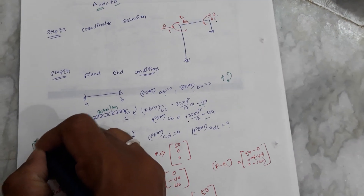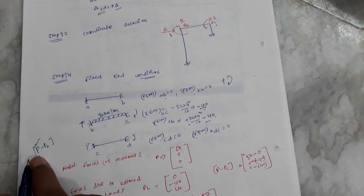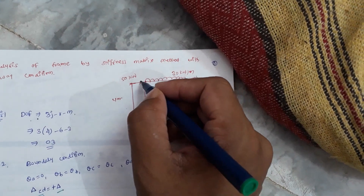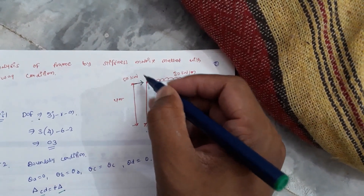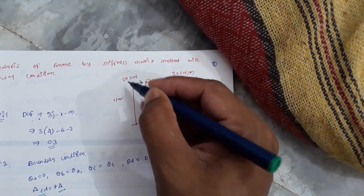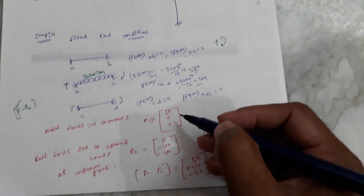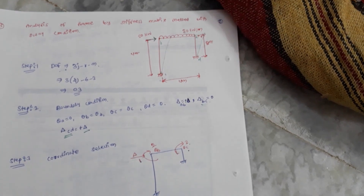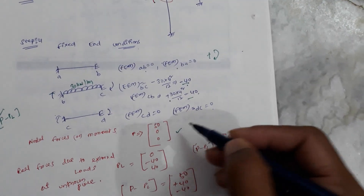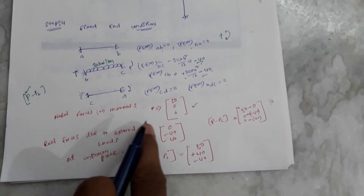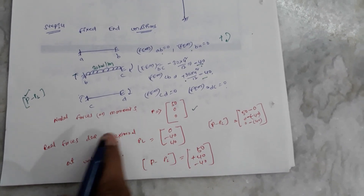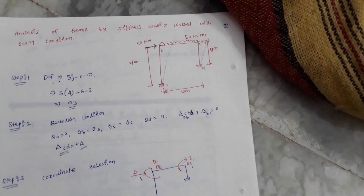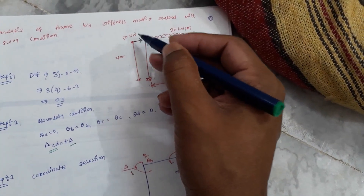Our equation is P minus PL. We need to find P, which indicates nodal forces or nodal moments. At position one (sway coordinate), there is a nodal force of 50 kilo Newton. At the rotation positions for B and C, there are no nodal moments, so those entries are zero. There is also no real force from external loading in the sway direction, giving zero for that term.